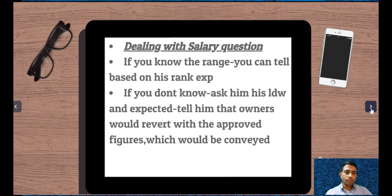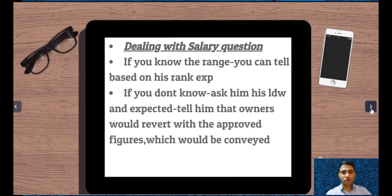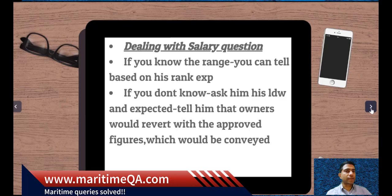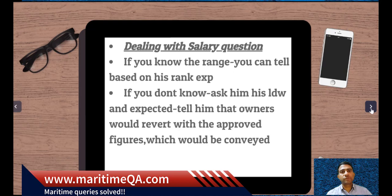Next is always the salary question — it is always the most difficult part. You might be at a lower rate and been told to just find a master or chief officer, but invariably all officers will ask the salary question. If you know the range, you can tell them: based on his rank and experience, between this and this will be your range, but the final decision will be taken by the management.